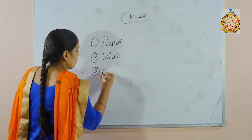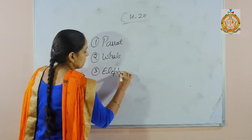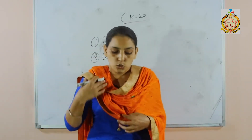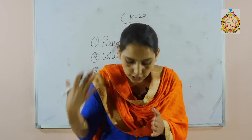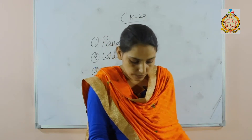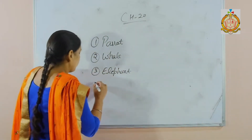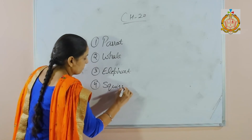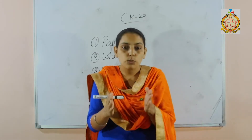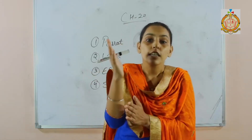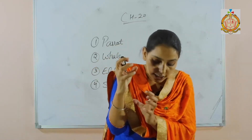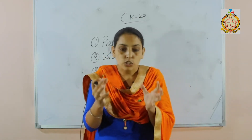Next, the third one is the elephant. The elephant uses its brain to create social interactions. Earth's largest animal is the elephant. Next is the squirrel — it has a sharp memory to remember where it stored its food. Squirrels have iconic behavior; they can store nuts.